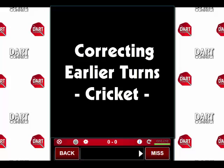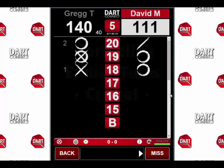With DartConnect you can go back and change some of the earlier turns in a game of cricket if you notice an error. However, if you are playing a league match or other sanctioned competition, you should check the rules under which you are playing that cover fixing incorrect scores, as many have rules that limit what can be corrected.